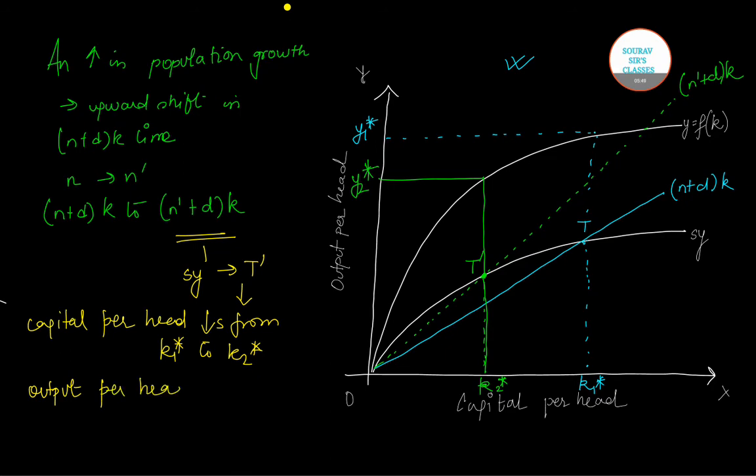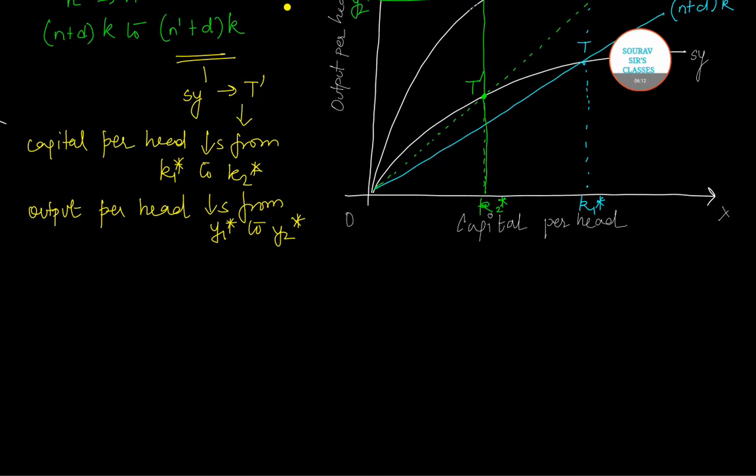So this new curve cuts the given savings curve sy at t', at which we can see that the capital per head measured on the x-axis has decreased from k₁* to k₂*, and the output per head has also fallen, it has actually decreased from y₁* to y₂*.